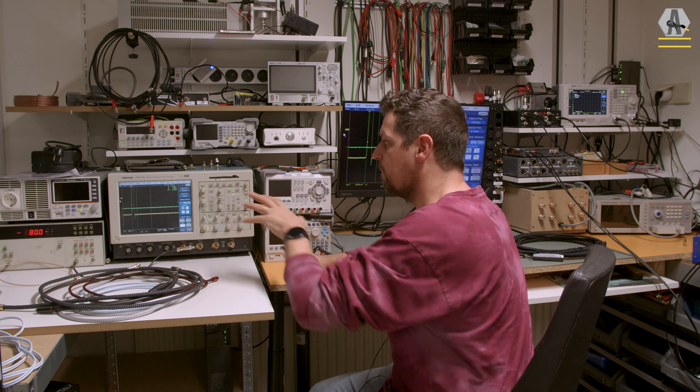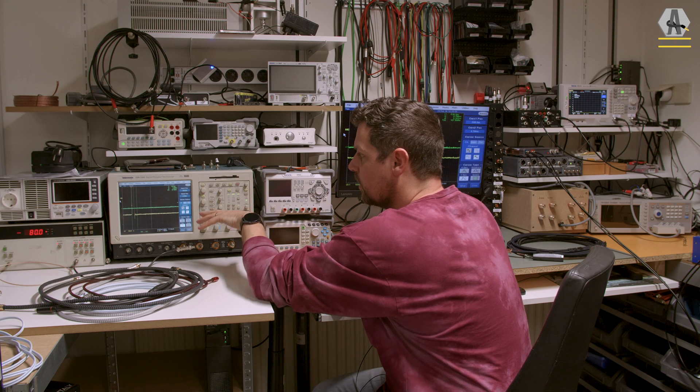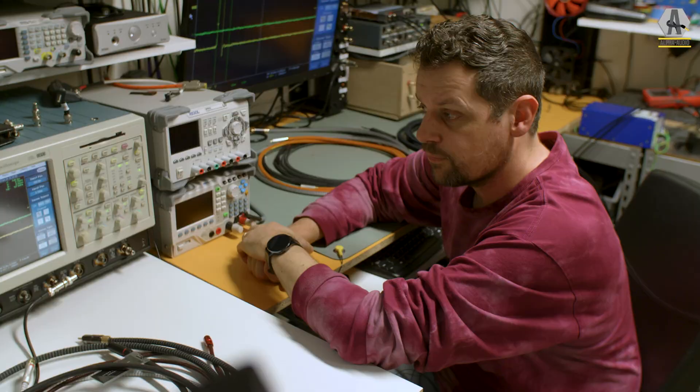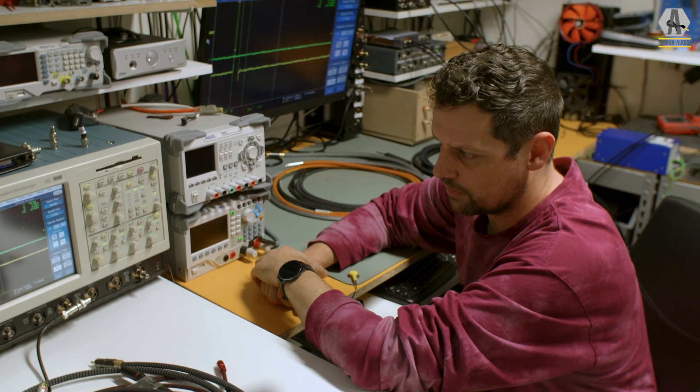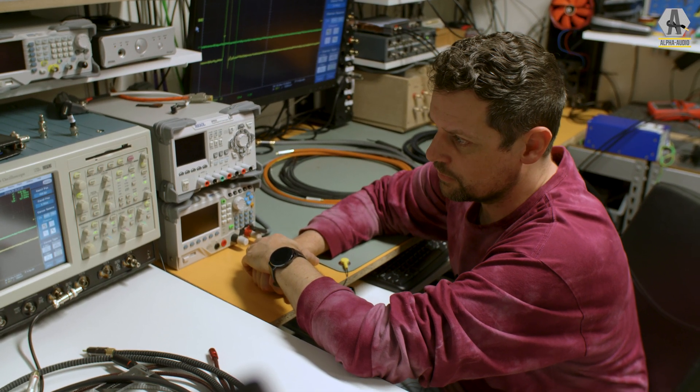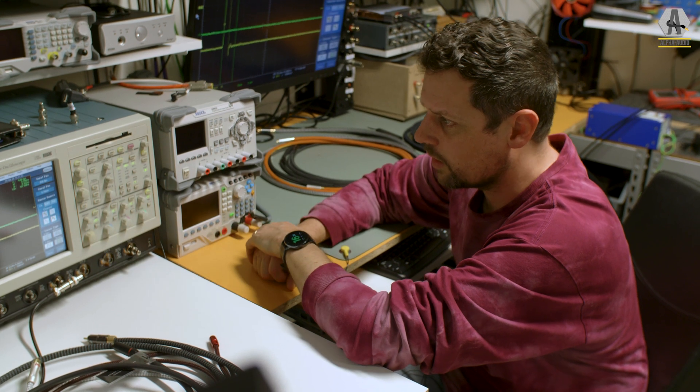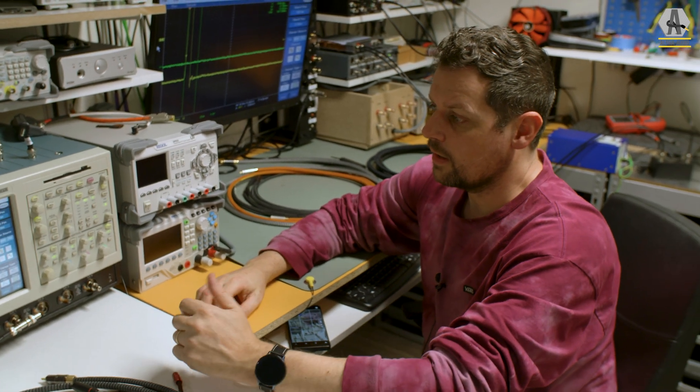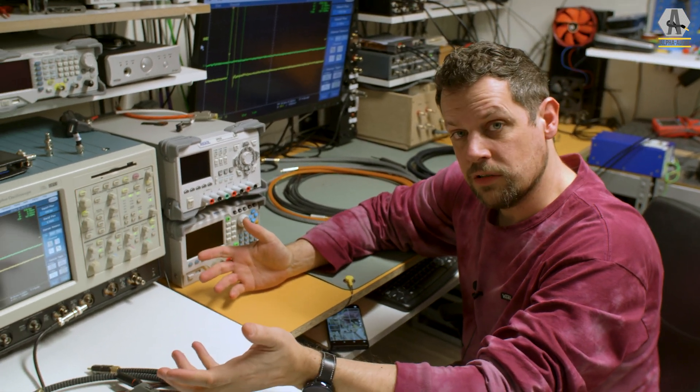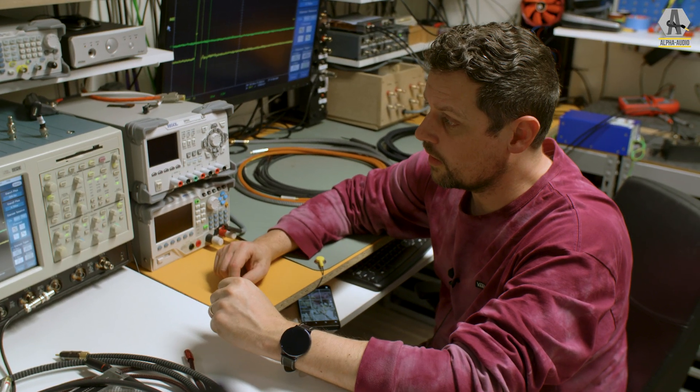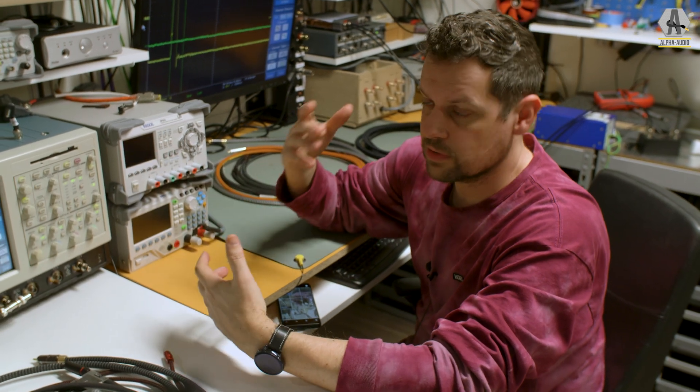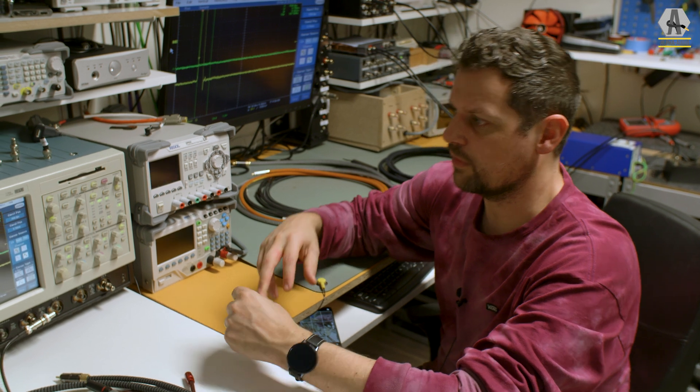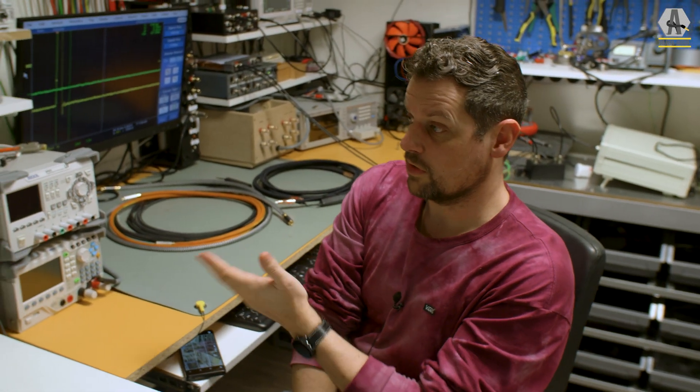Then we have the new secondhand eBay Tektronix scope, the TDS 7104. It's a beast of a scope, I love this thing to death. It's incredibly fast and reliable - I hope it keeps working. It's pretty easy to use, quite intuitive. It's a one gigahertz scope, so we can look really deep into the signals with 10 giga samples per second.